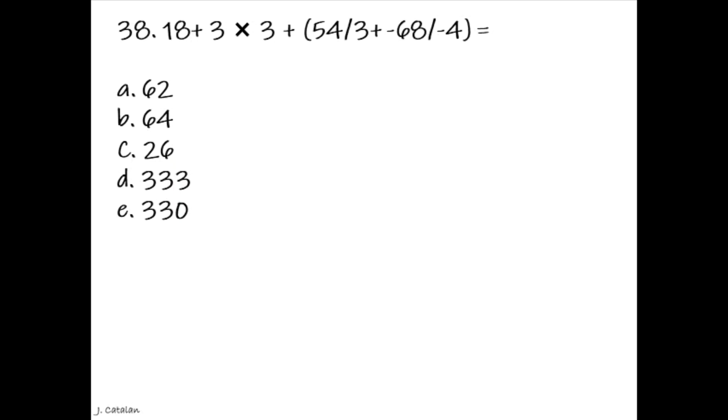Question. 18 added by, 18 added by 3, multiplied by 3, added by the sum of, 54 over 3 plus negative 68 over negative 4, equals. Answer. 62.